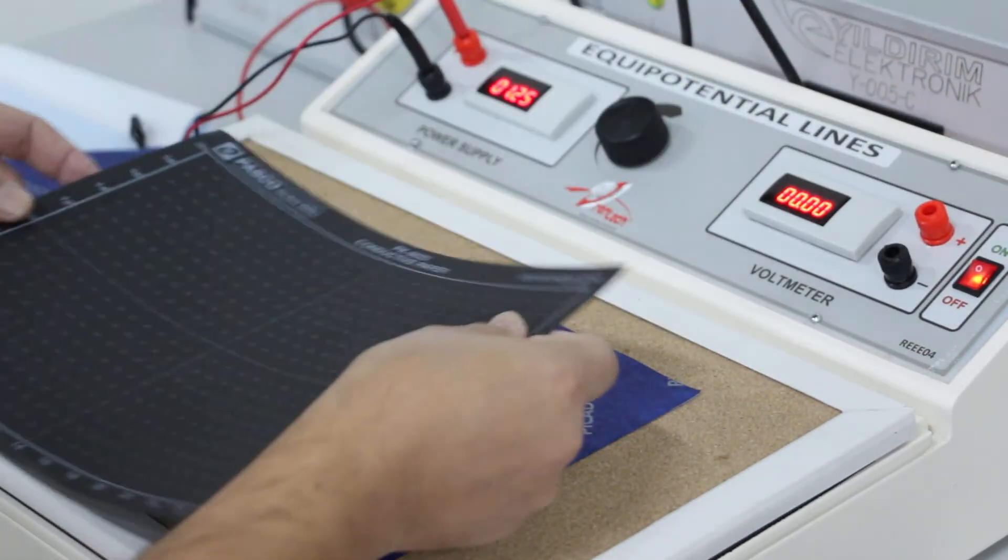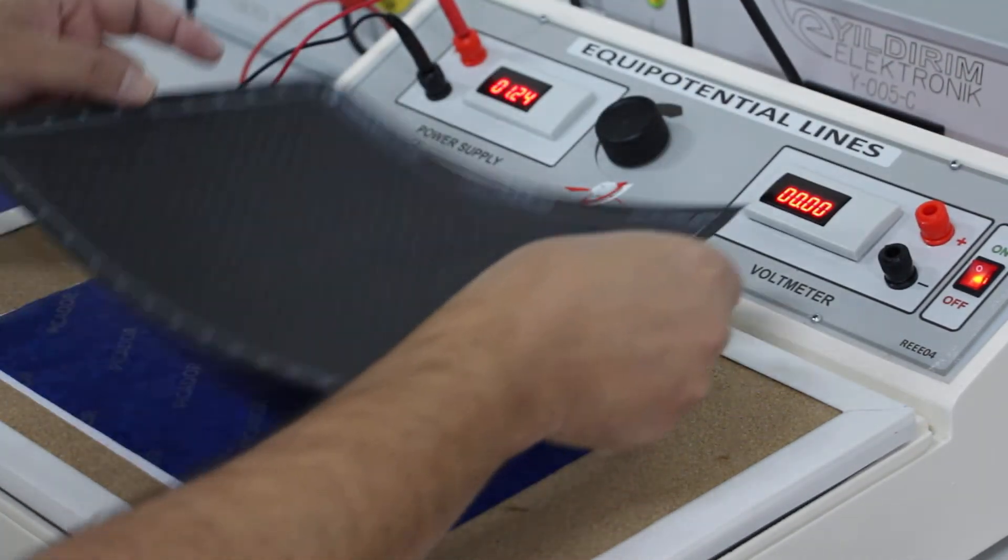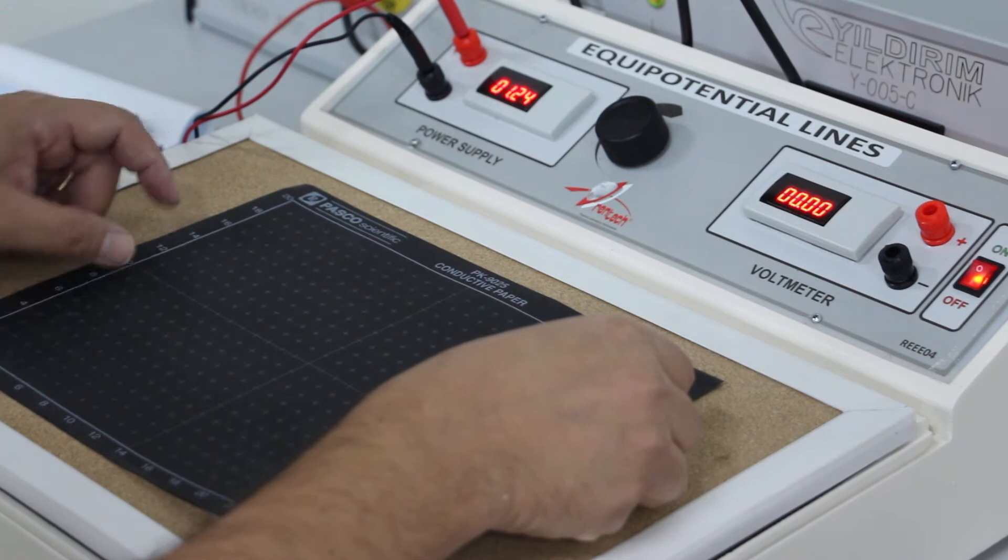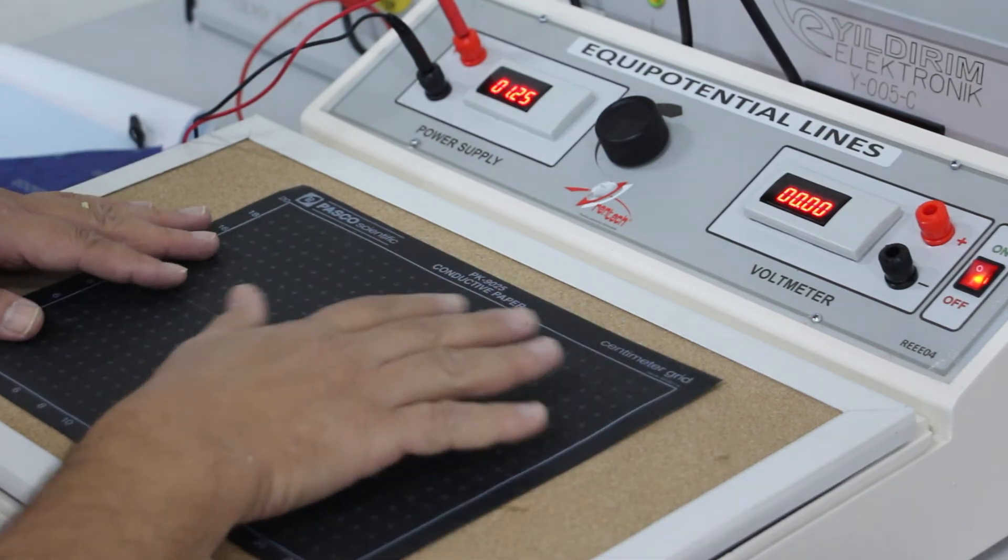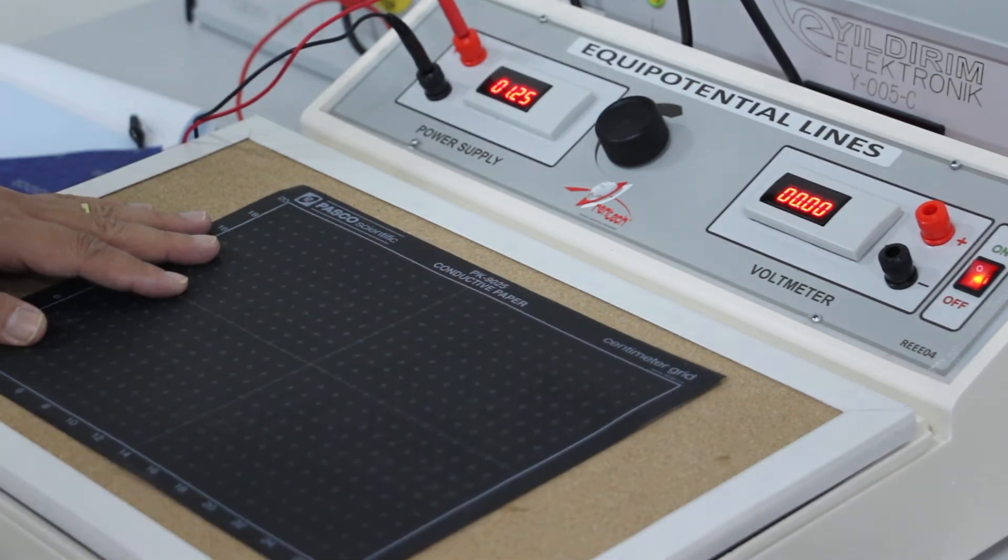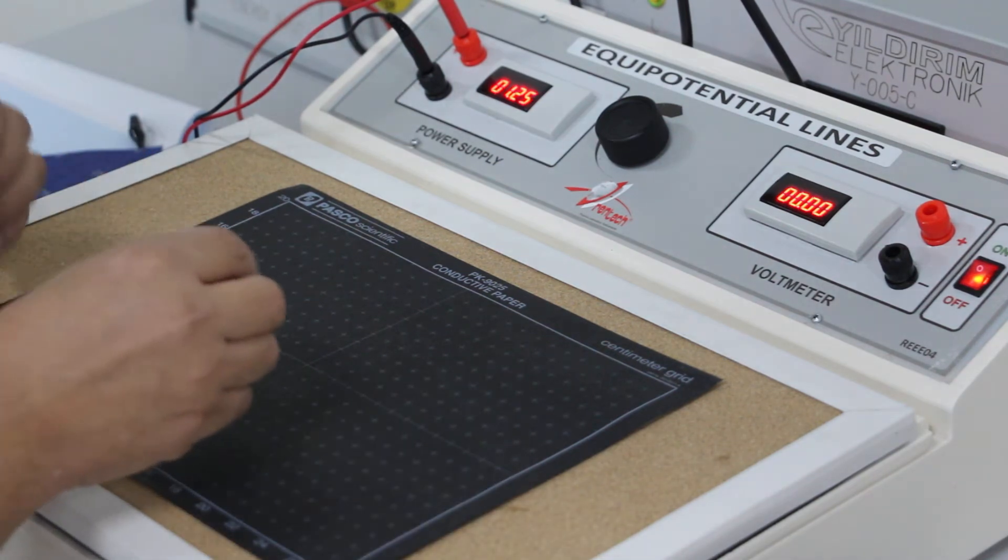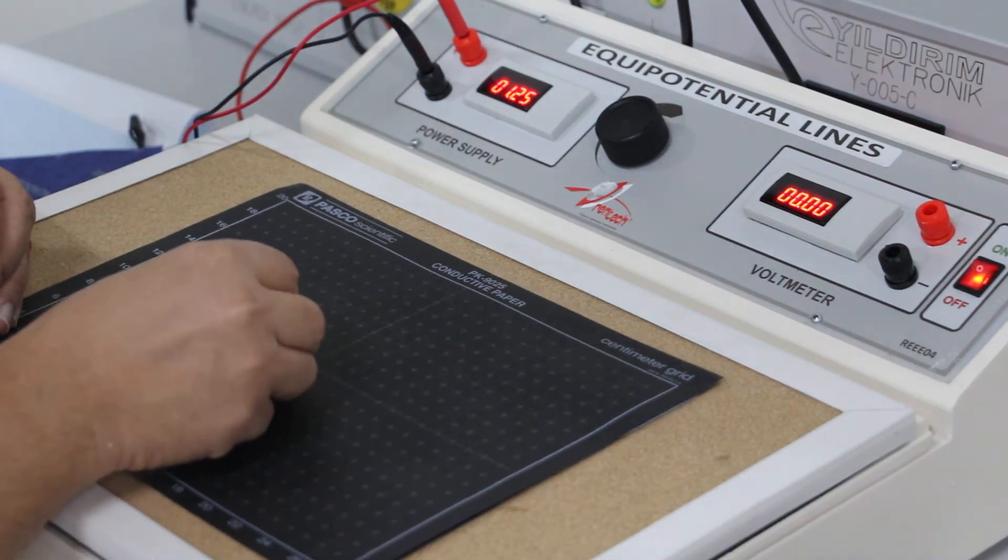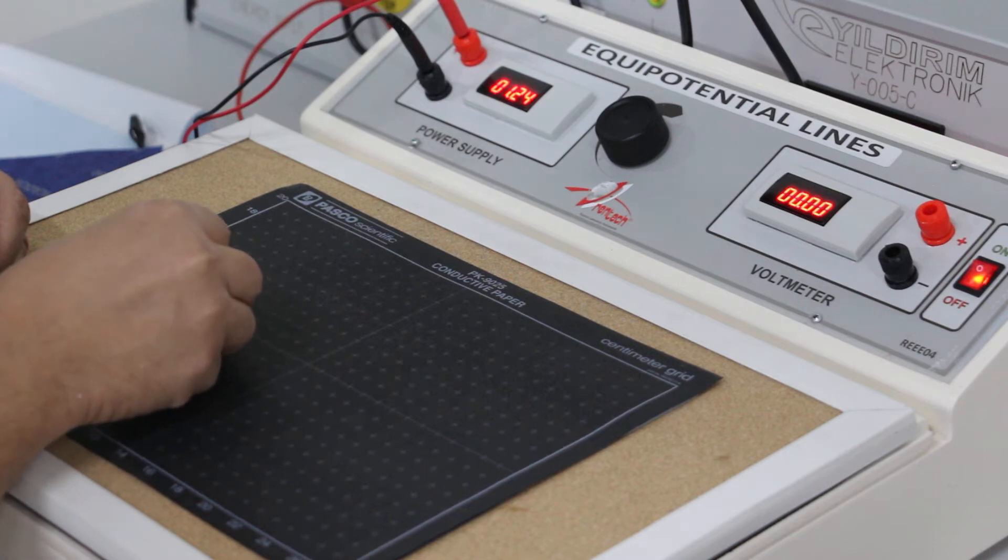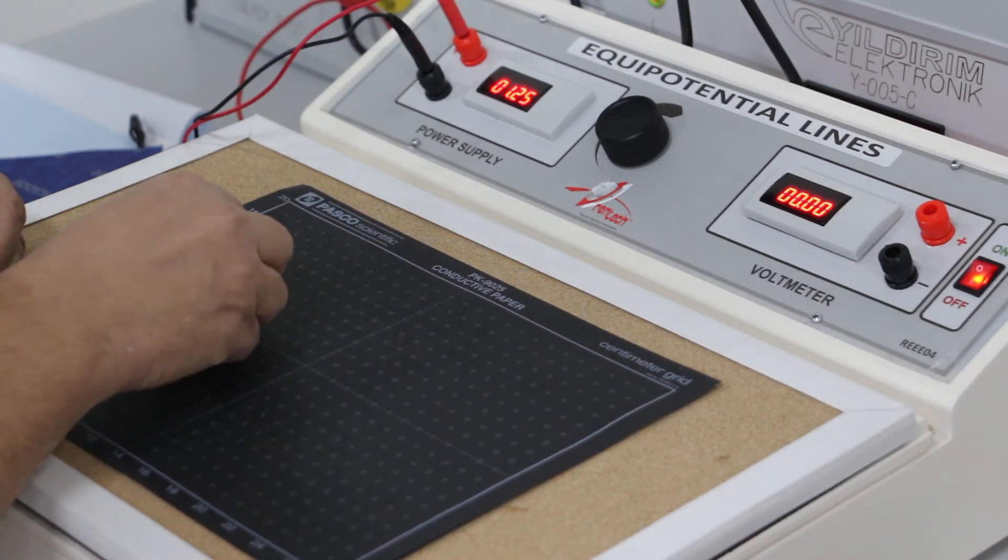Then I put the conductive paper on it. Here I put from the middle one, two, three, four, five, six, seven, eight, nine, ten dots.